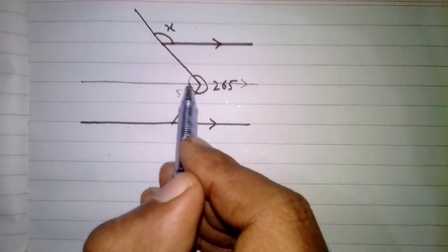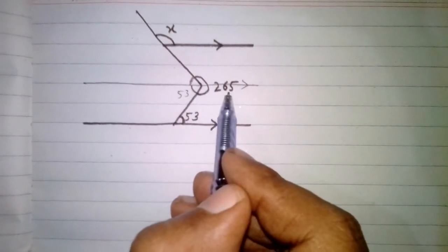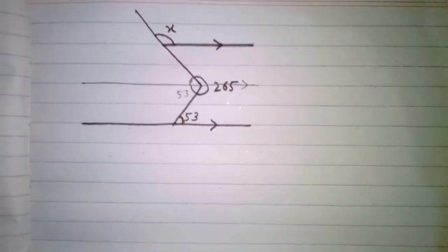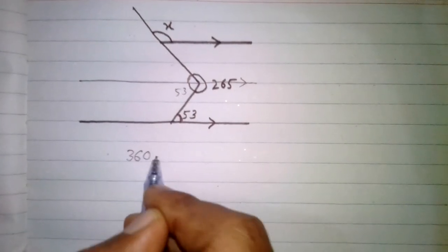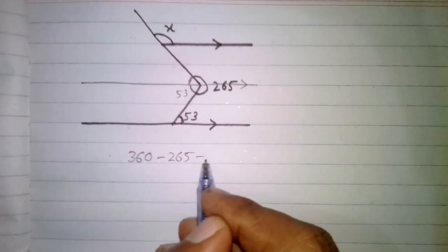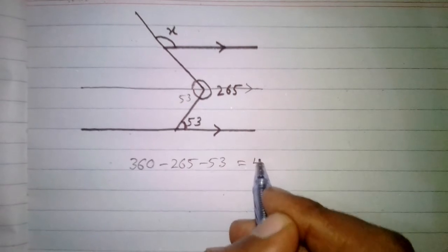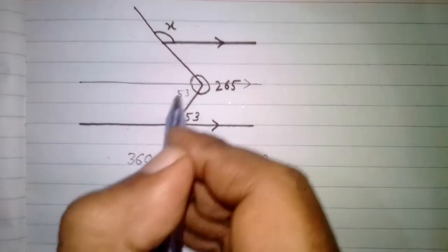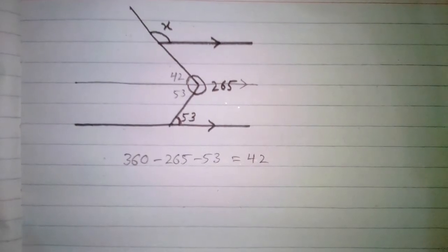equal to 360, so we can find this angle by subtracting 265 and 53 from 360. So we have 360 minus 265 minus 53 equals 42. So this angle is equal to 42.